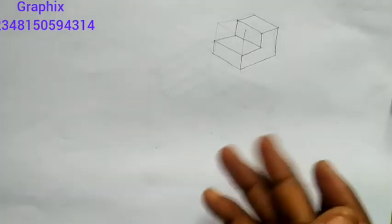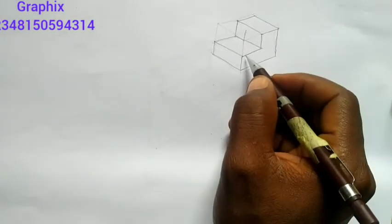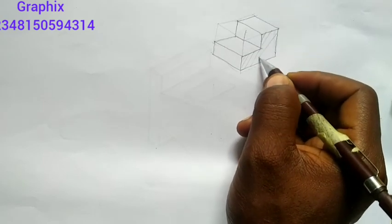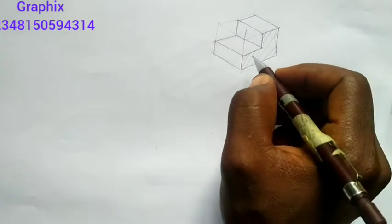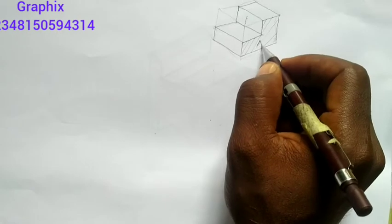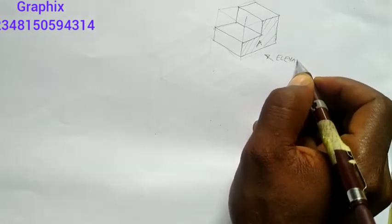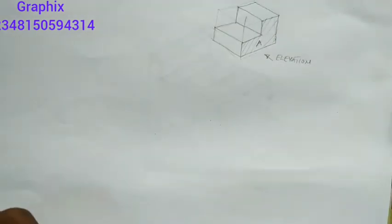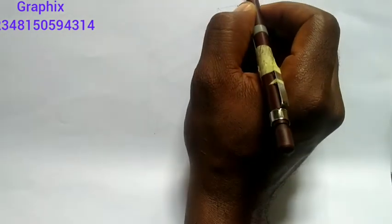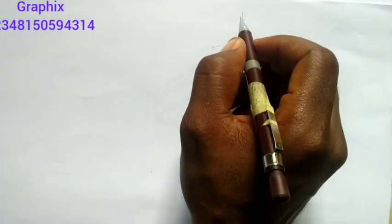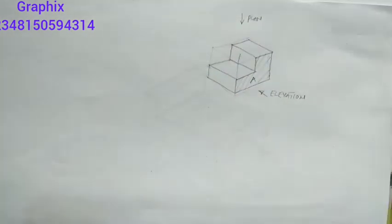We have three parts that we can see. Assume this figure — if you look at this side, we have a section here. I'll call it section A. If you're looking at this side, that will be our elevation. Now if you look from the top, we'll call it the plan.